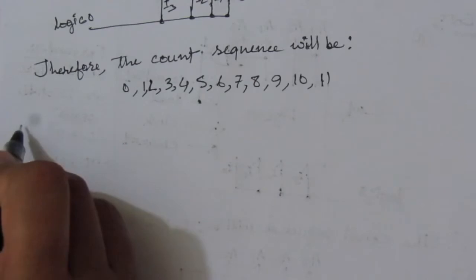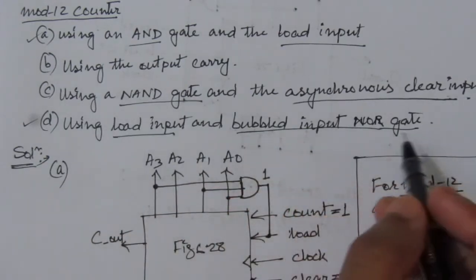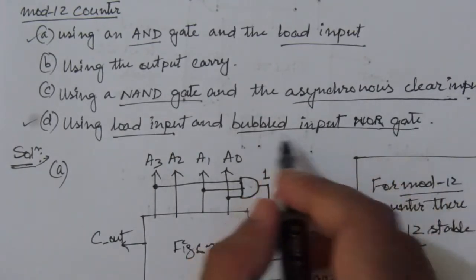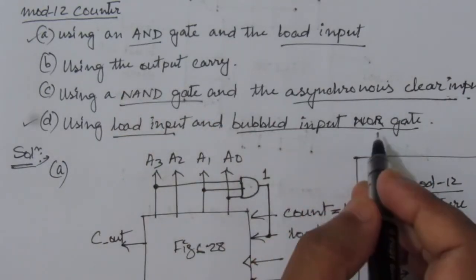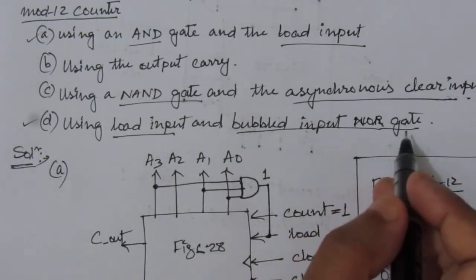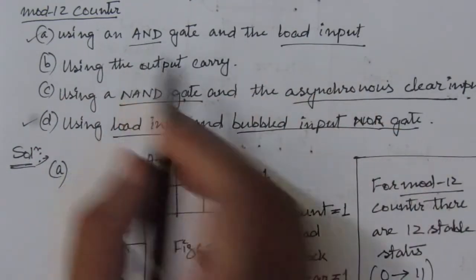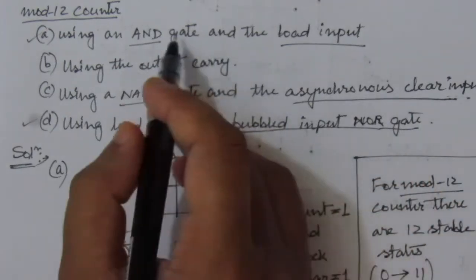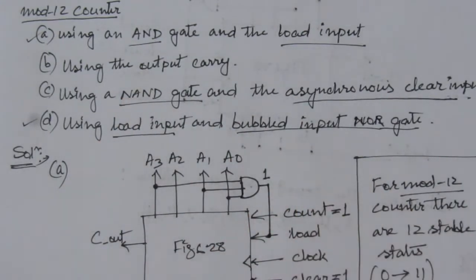Now let us go to the fourth part of the problem. In the fourth part, we have to use a load input and bubble input NOR gate. We need to understand that this bubble input NOR gate is nothing but an AND gate. So in this first case we had a load input and AND gate; here also we have a load input and bubble input NOR gate — that means this circuit will be similar to the first circuit, only the AND gate is replaced with a bubble input NOR gate.